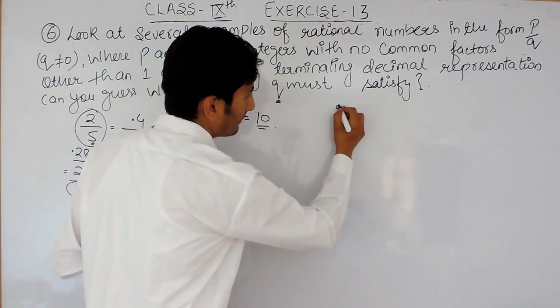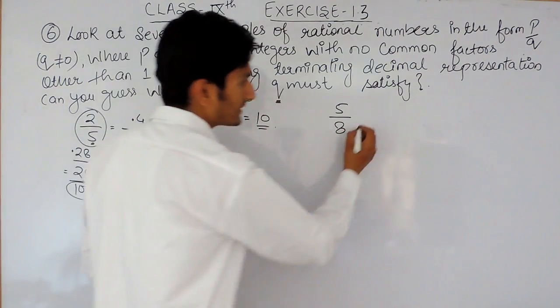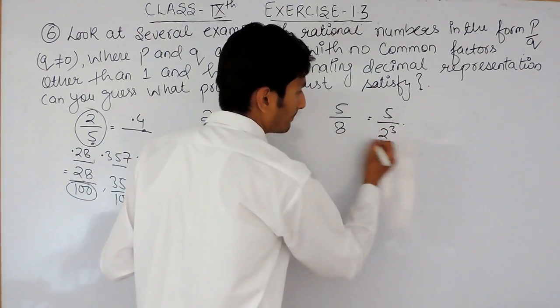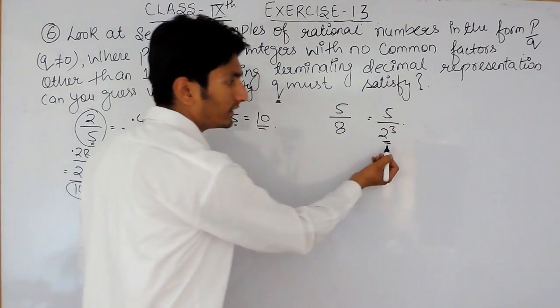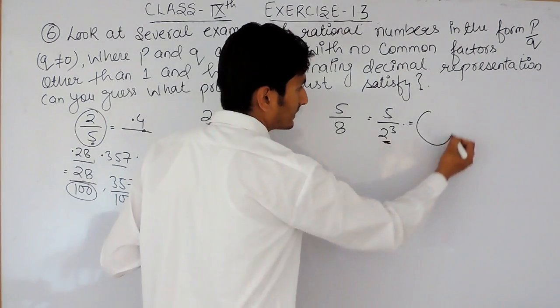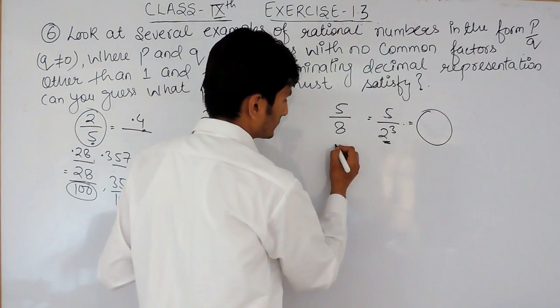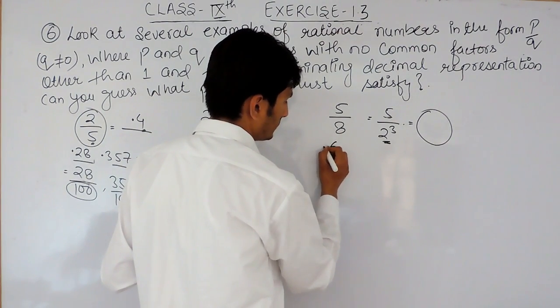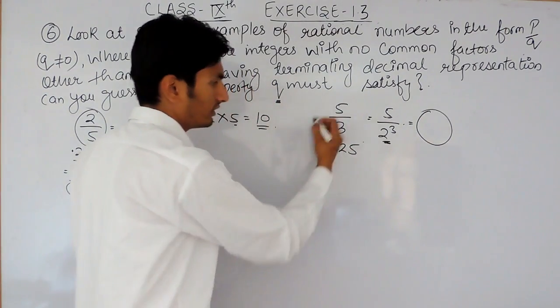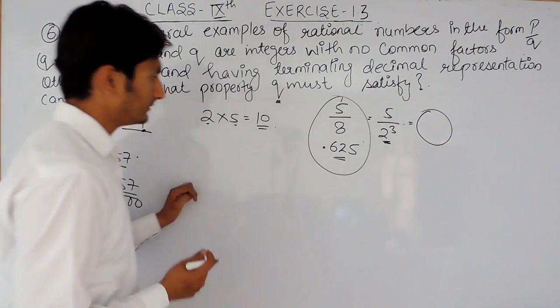For example, if I am writing as 5 upon 8, so obviously this can be written as 5 upon 2 to the power 3. There is only 2 in the denominator, so it will obviously terminate. And when you divide this, the result will be 0.625. So this is the case here.